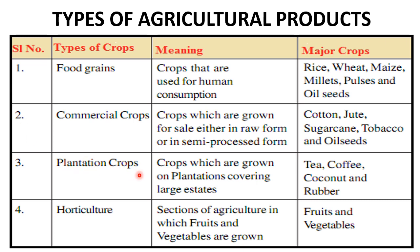Plantation crops are crops which are grown on plantations covering large areas, where all the processing units are also located within the estate and the final product after processing is sent to market. These include tea, coffee, coconut, and rubber.